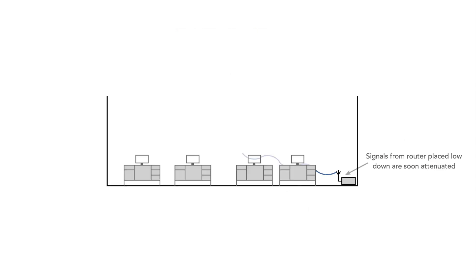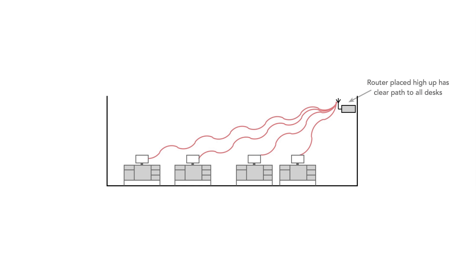Third, in the same vein, keep the router off the floor, especially in offices. Signals like to travel in a line of sight, so keeping them down low means they have to travel through desks, furniture, and wiring, and that's not good. Keeping them high gives them a better line of sight coverage.